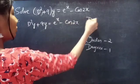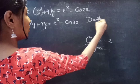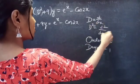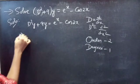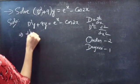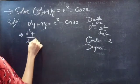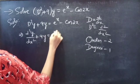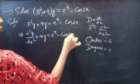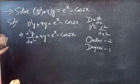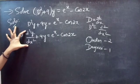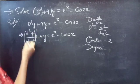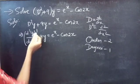We know that D is the differential operator, so D² will be d²/dx². We can write this as d²y/dx² + 9y = e^x − cos 2x. Here d²y/dx² is the highest derivative, so order is 2 and degree is 1.